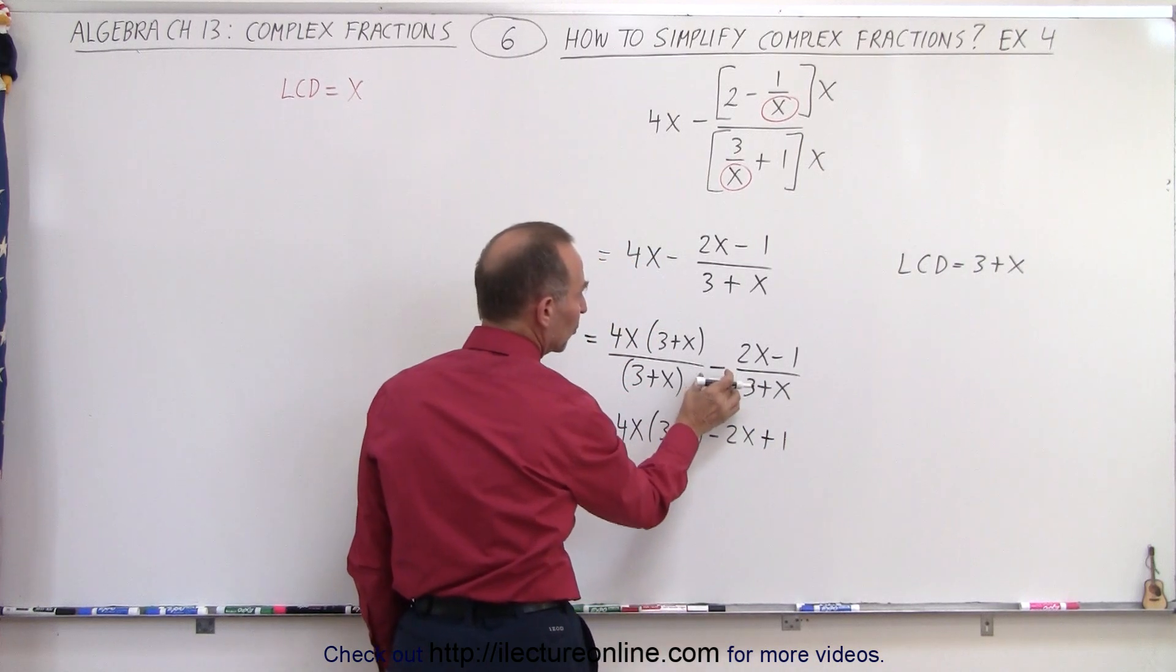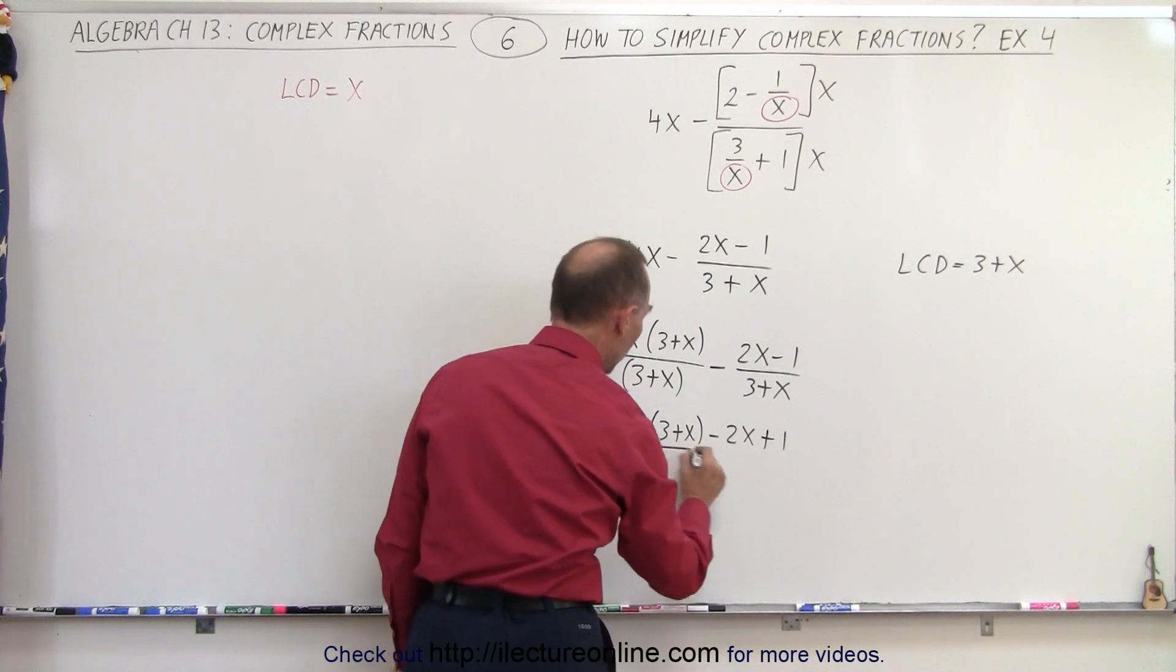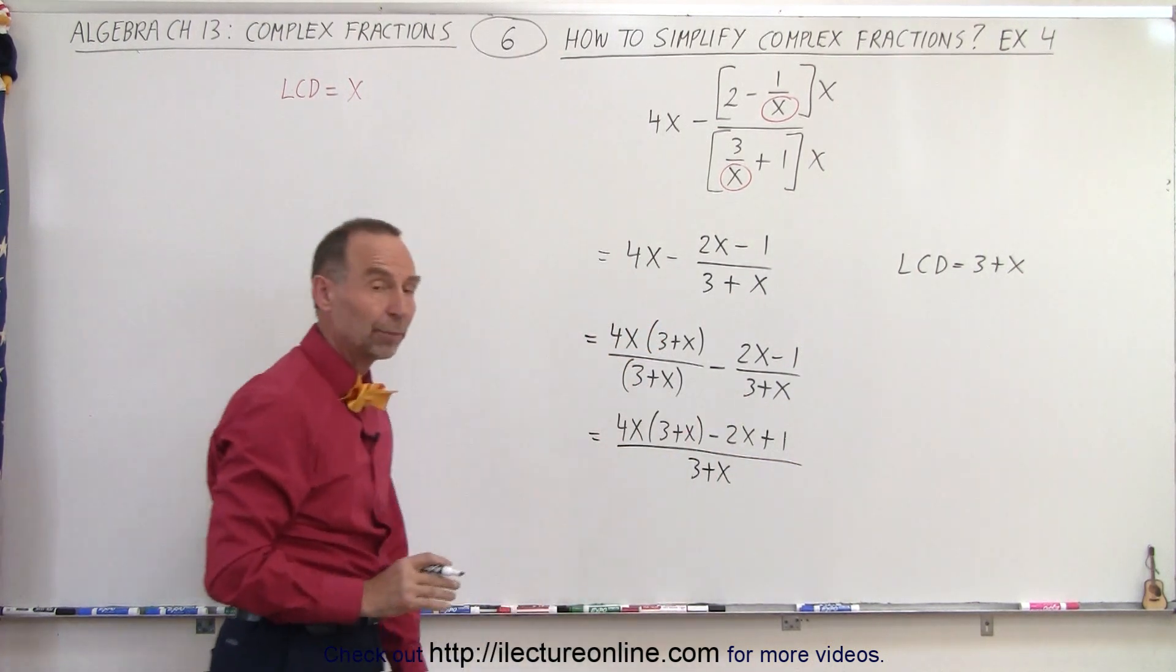So here we have to be careful. We're subtracting both of these, so 2x becomes negative, and the minus 1 becomes positive, all divided by 3 plus x. Now we just have to multiply what's in the numerator and collect common terms.